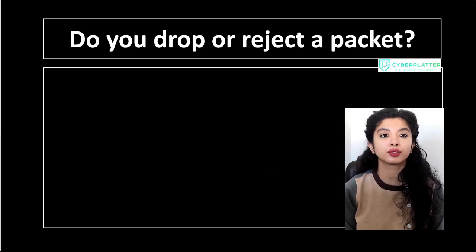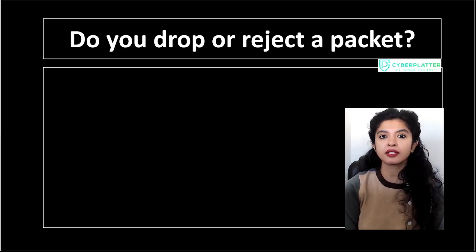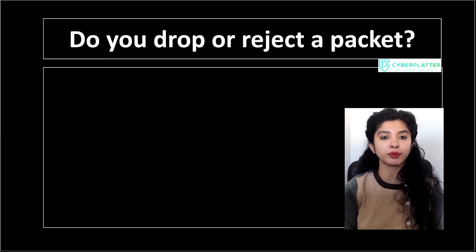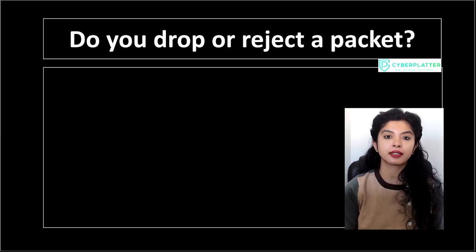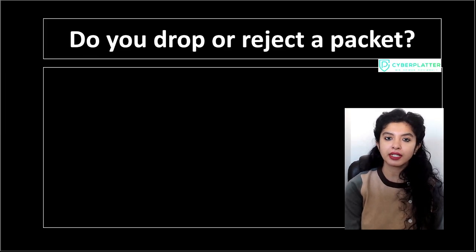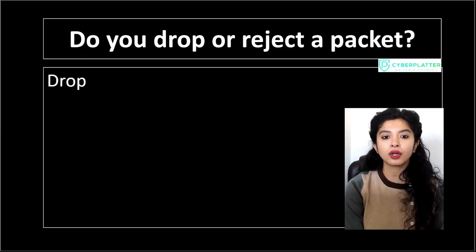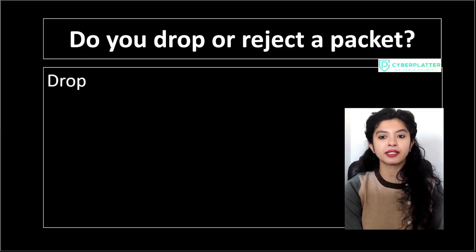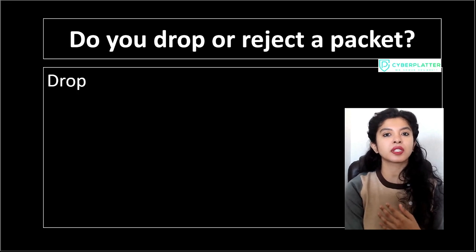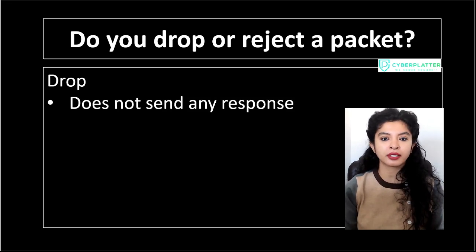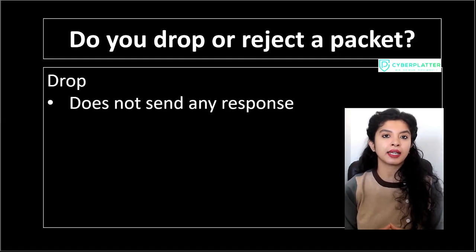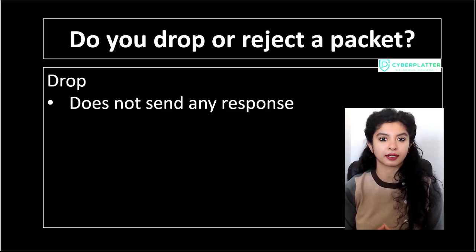First question: do you drop or reject a packet? The answer depends on the situation because both are valid actions, but they serve different purposes. Let's look at dropping a packet. When a firewall drops a packet, it basically throws it away without saying anything back to the sender. There is no error message, no rejection, nothing. It does not send any kind of response back to the sender.